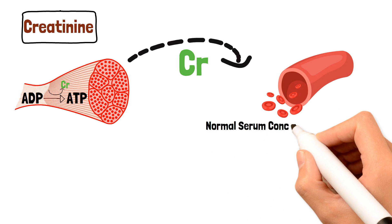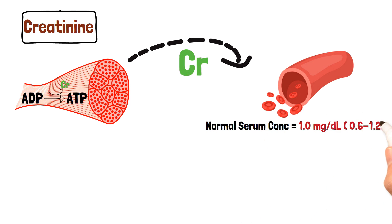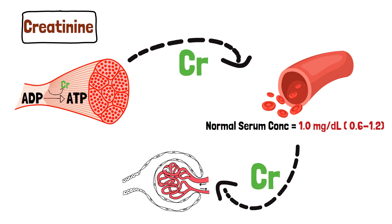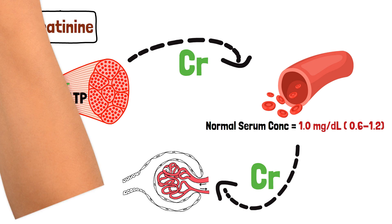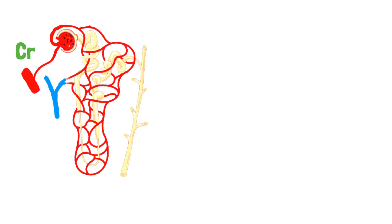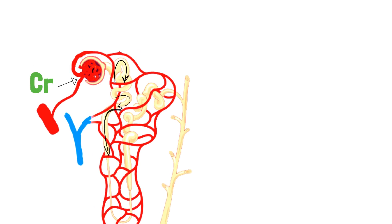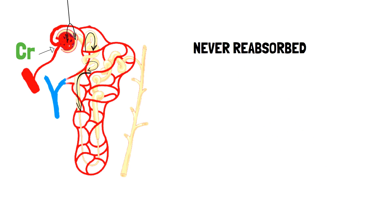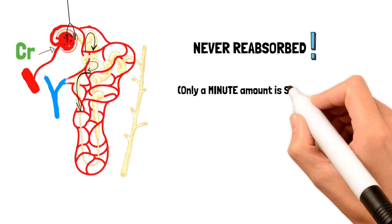The normal serum concentration of creatinine in the blood is around 1 milligram per deciliter, ranging from 0.6 to 1.2. Creatinine flows from the blood, reaches the glomerulus, and is freely filtered into the Bowman's capsule, then into the renal tubules. The concentration of creatinine that reaches the glomerulus is the same as when it enters the nephron for excretion.